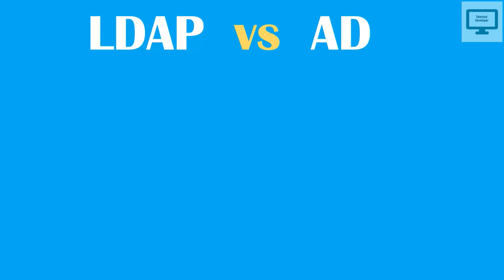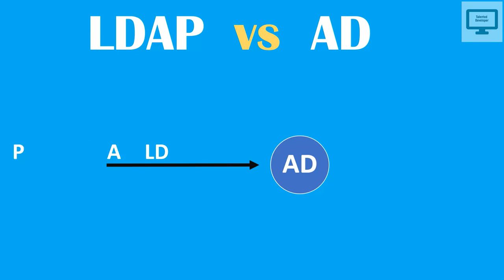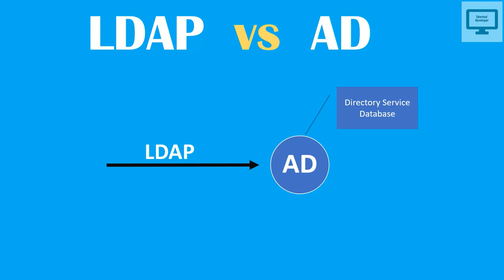What is the difference between LDAP and Active Directory? LDAP is a way of speaking to Active Directory. Active Directory is a directory service database, and LDAP is one of the protocols used to talk to it.